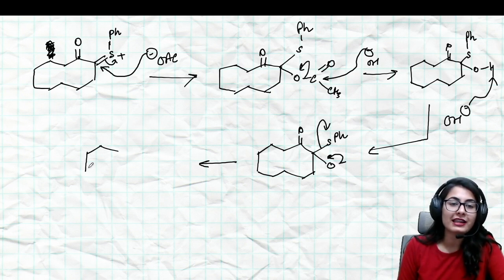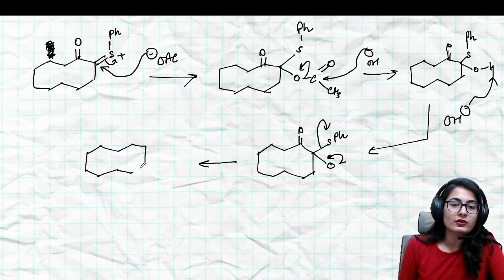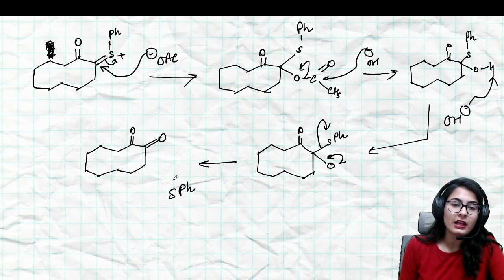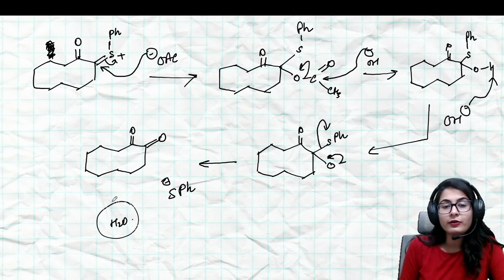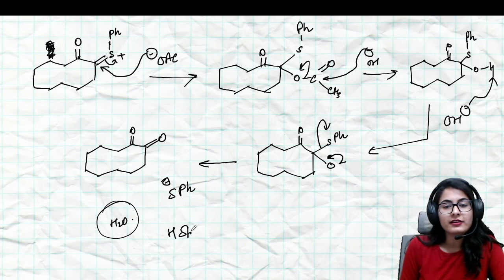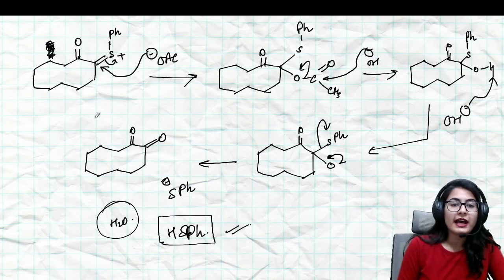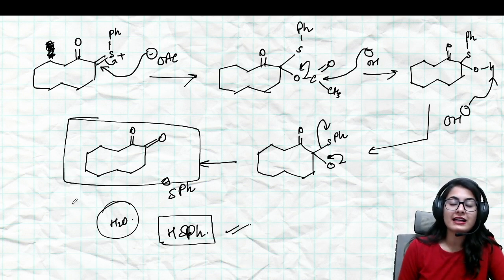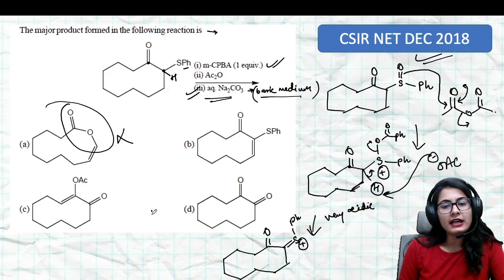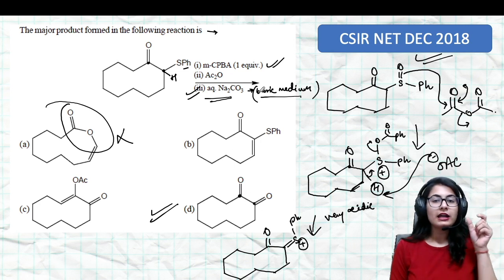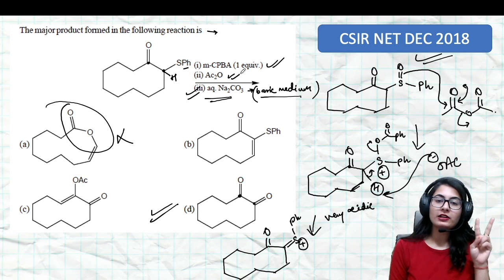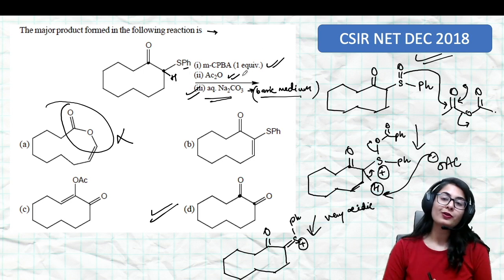Sulfur is also a very good leaving group, so sulfur would rather prefer to leave as a sulfide like this. From the medium it's going to take away a proton from water and leave as your thiol. This is your byproduct. The product of this reaction is a diketone, a 1,2-diketone. Do we have that? Yes, in option D. This is your diketone that you get. Till this part, the second step was Pummerer rearrangement.